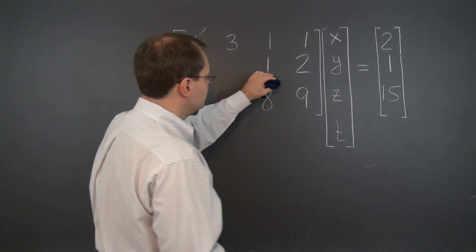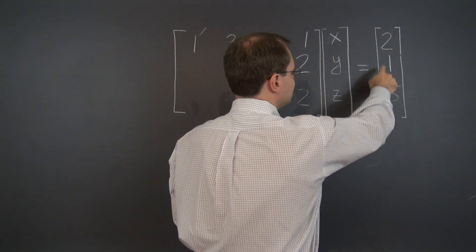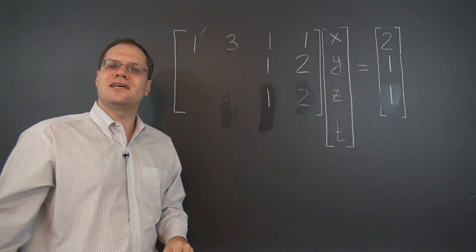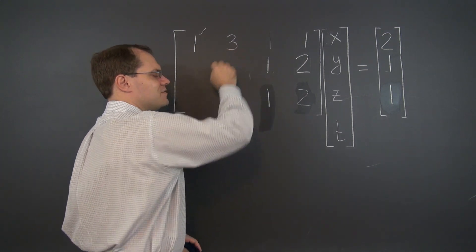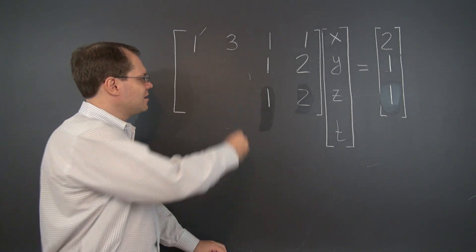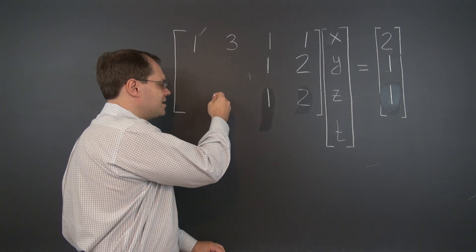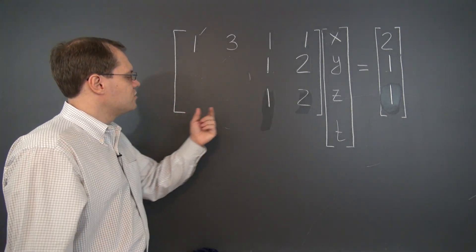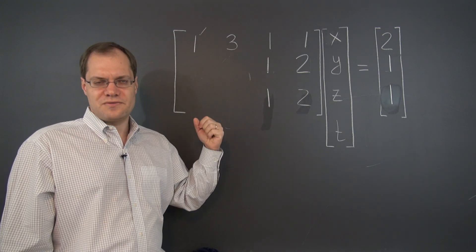Continuing: a one here, nine minus seven gives two here, fifteen minus fourteen gives one here. We're done with two steps of Gaussian elimination and now realize that it is not possible to find a pivot in the second column. The three cannot be a pivot, as we've discussed, and there are no other non-zero entries in that column. So there cannot be a pivot in the second column no matter what we try to do — an example of us having no control over the columns in which pivots appear.